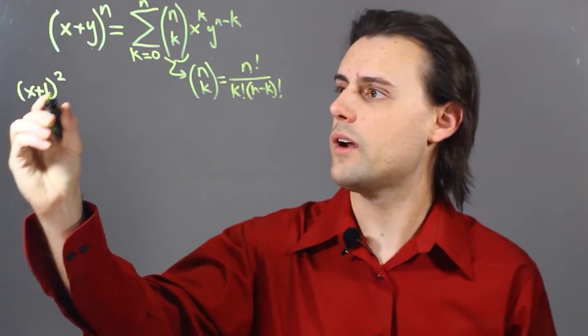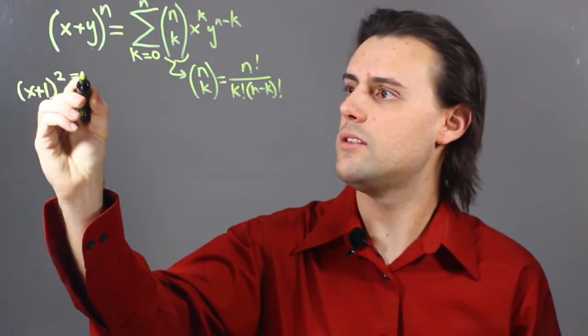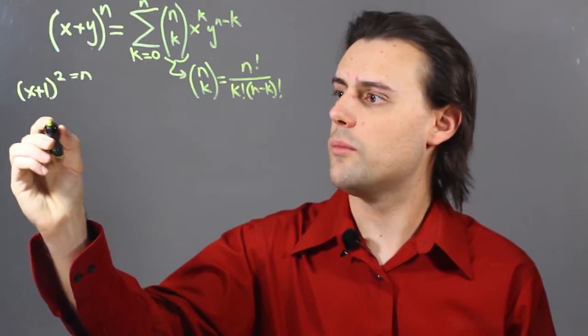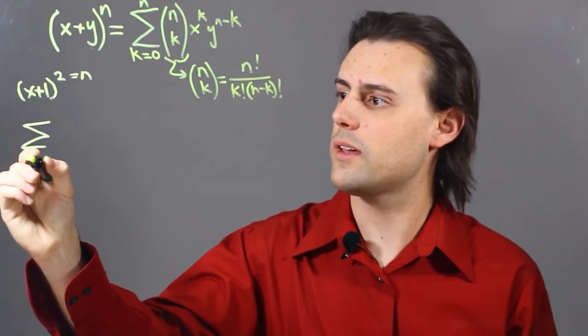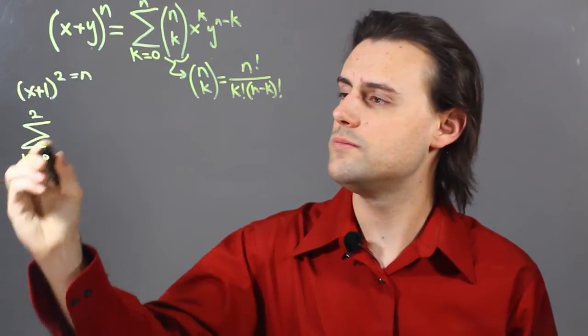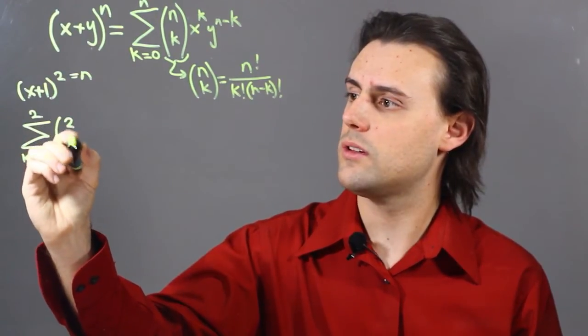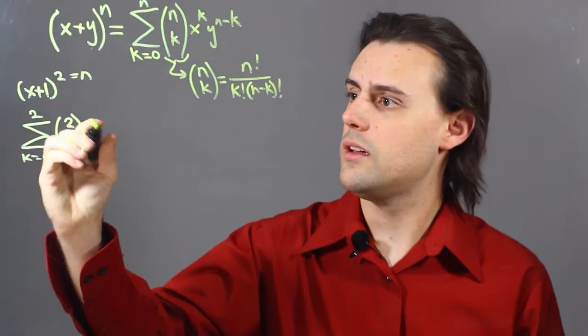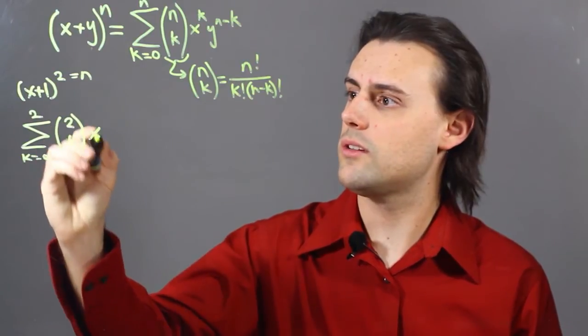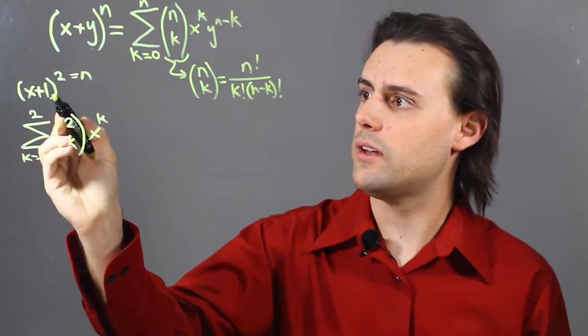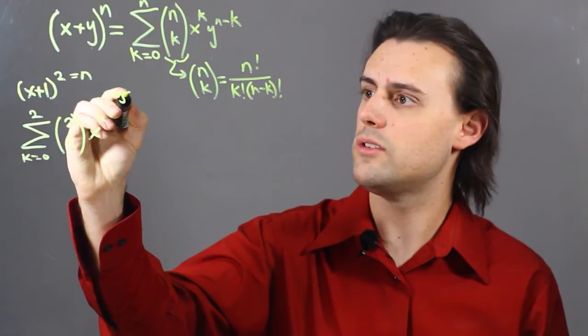So, what I have is n is equal to 2, so my sum is going to go from k equals 0 to 2, and in my multiplicity I have 2 and then k, then I'm going to have x raised to the power k, and y, you'll notice, is equal to 1.